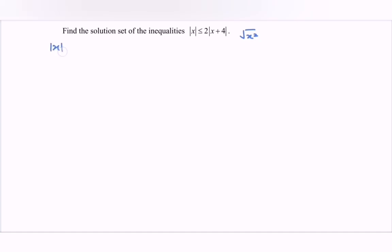So modulus of x less than equals to 2 multiplied with the modulus of x plus 4. So what we can do is square both sides.